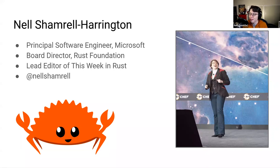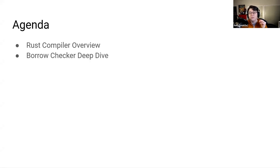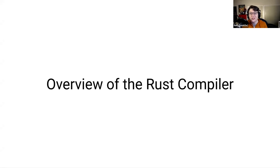Moving forward, let's set some expectations here. We'll first do a bit of background on the Rust compiler and compilers in general in order to put the borrow checker in context. Then we will do a deep dive specifically on the Rust borrow checker. So let's go ahead and start with an overview of the Rust compiler as a whole.